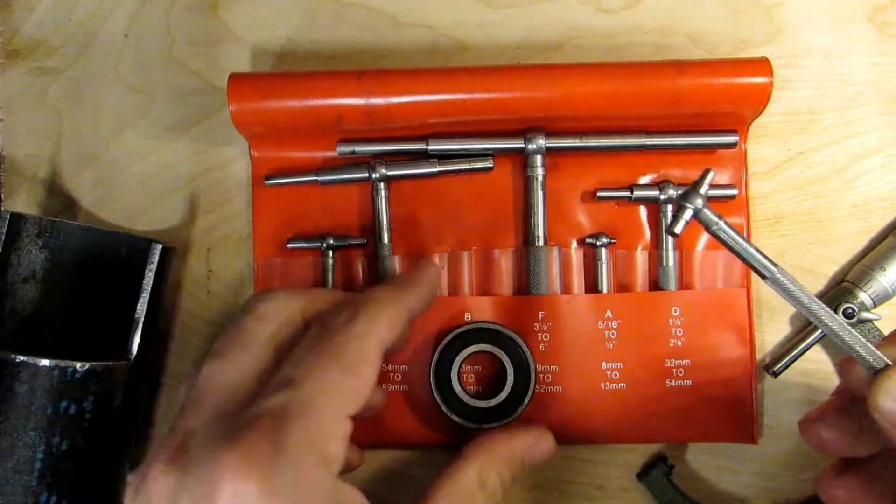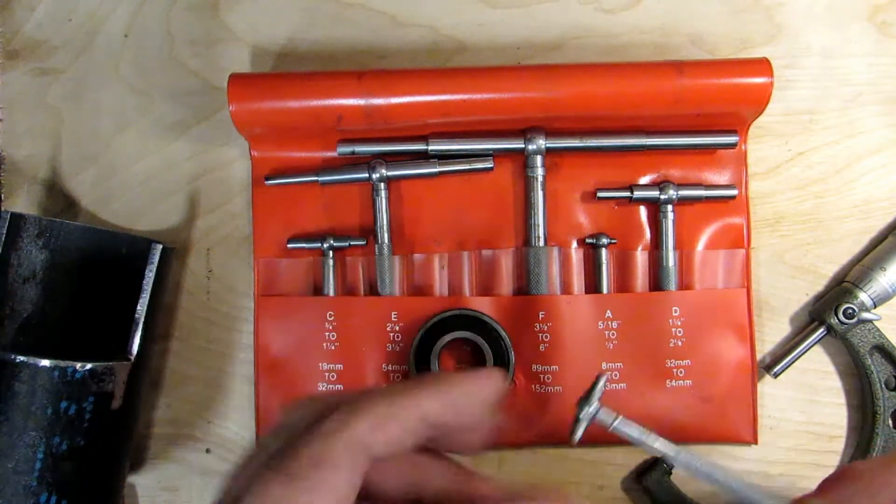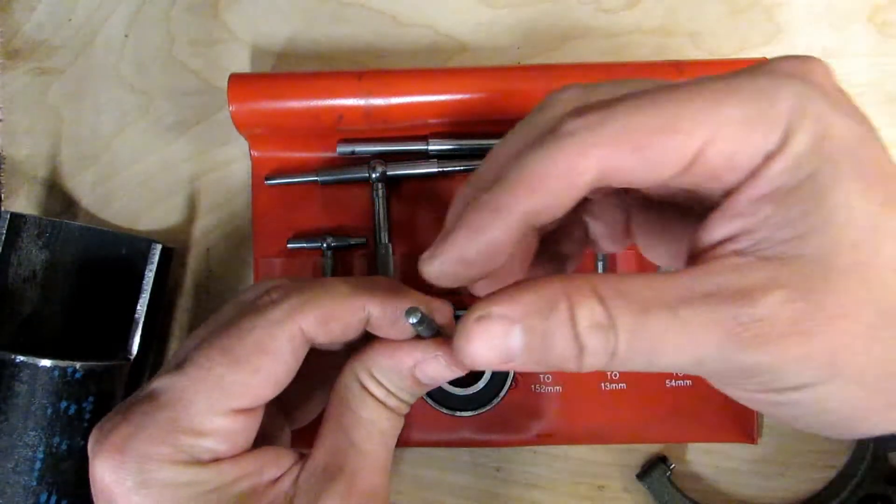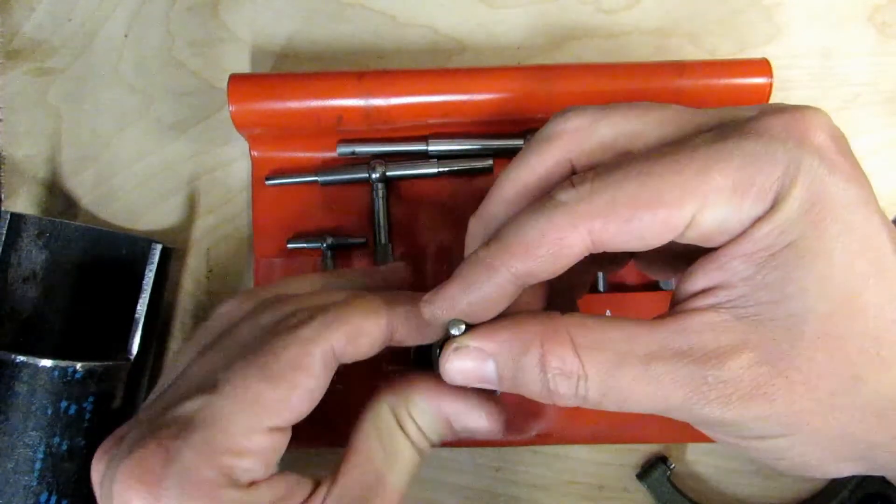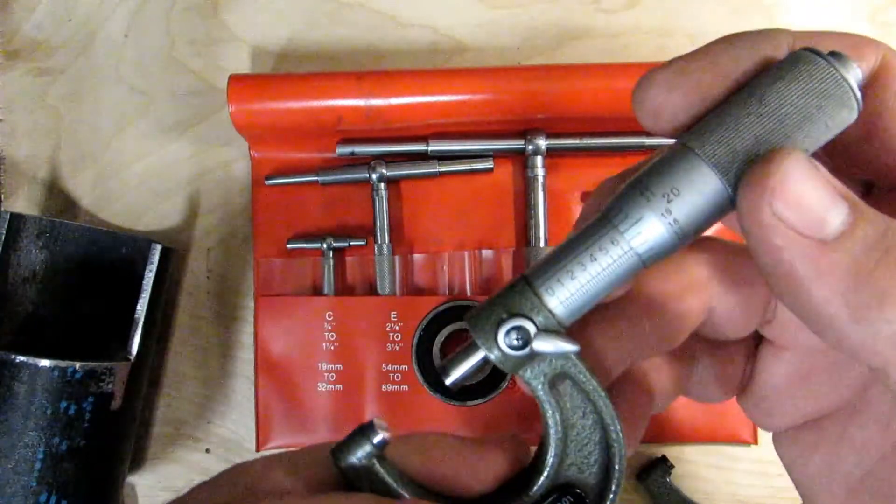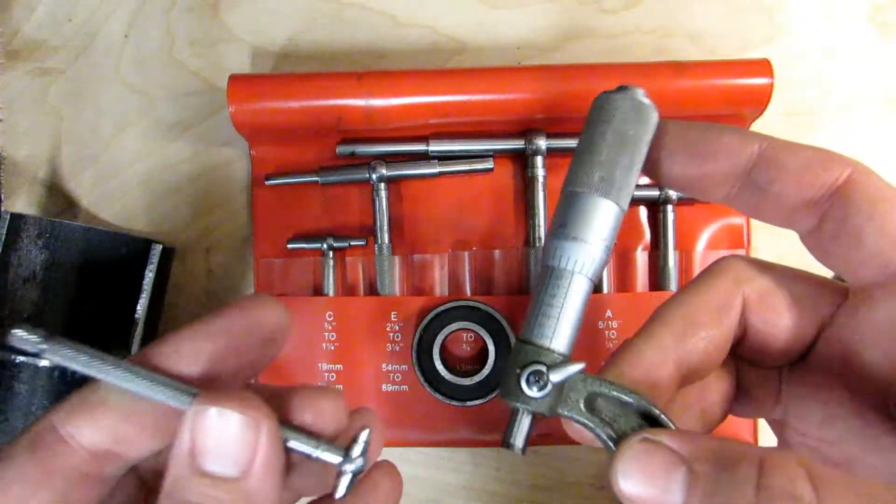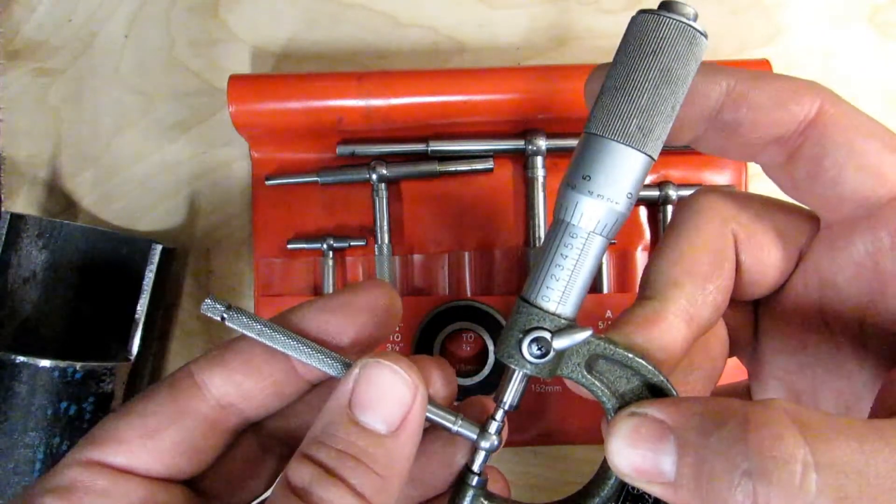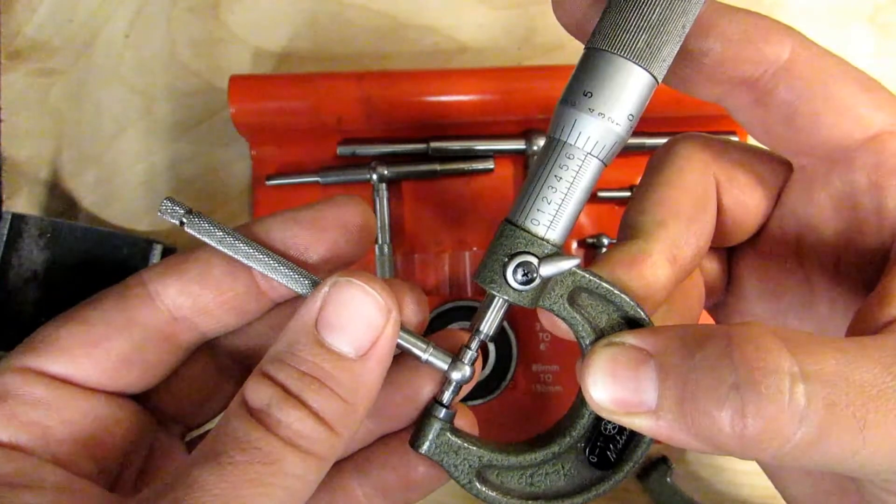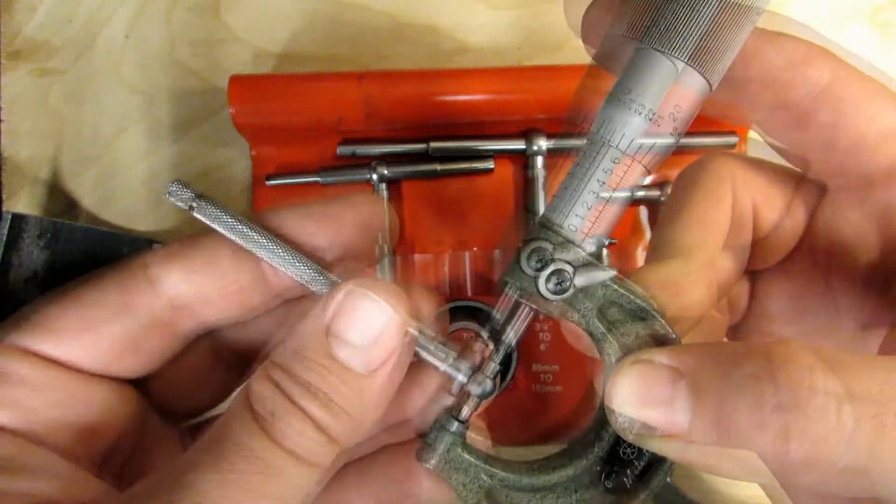So I can take this telescoping gauge that measures from half to three quarters. I can put it into that bearing, tighten up my screw, I can sweep it out, and then take my micrometer here. And if I'm not getting .669 something, the fault is mine. It's not the bearings, it's not the telescoping gauge.